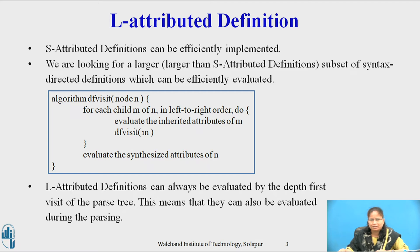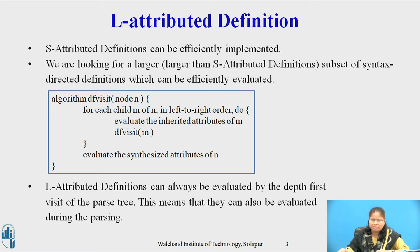When the translation takes place during parsing, the order of evaluation of attributes is linked to the order in which the nodes of a parse tree are created by the parsing method. The order for many top-down or bottom-up approaches is the one obtained by applying depth-first order to the root of the parse tree.